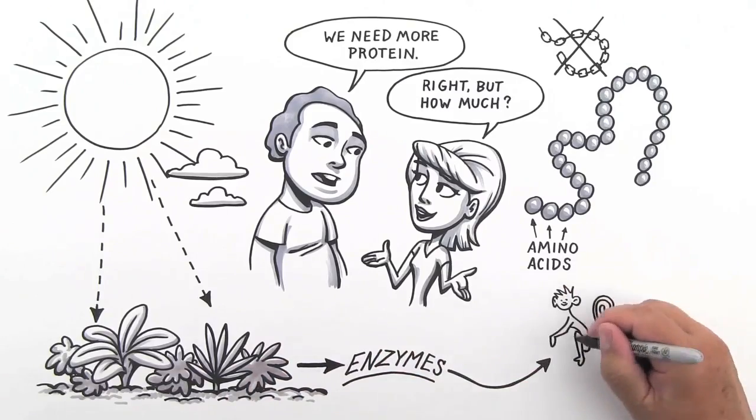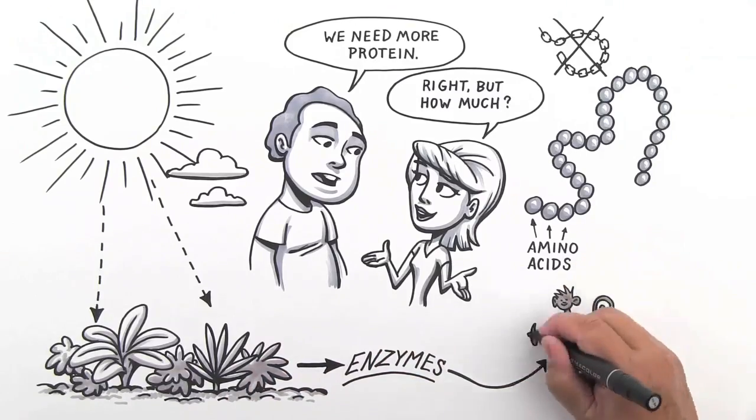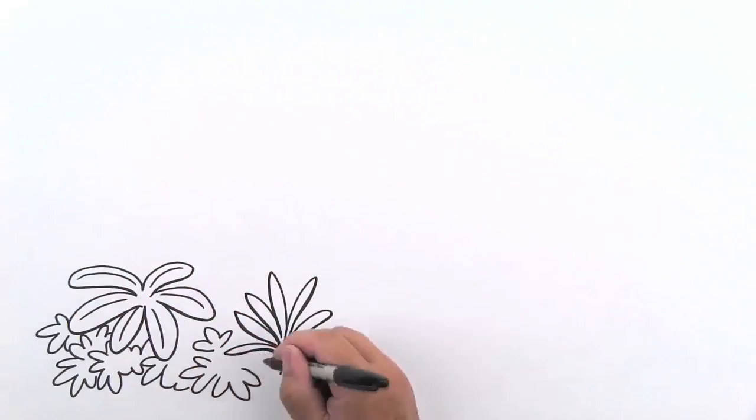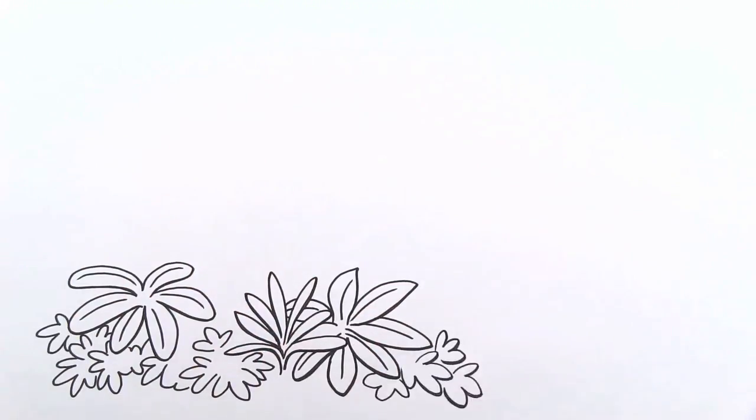These then travel up the food chain to monkeys and us. It makes sense to get the original solar energy and amino acids from the source: plants. Sun Warrior protein comes only from plants and isn't processed or cooked over and over again like other proteins.